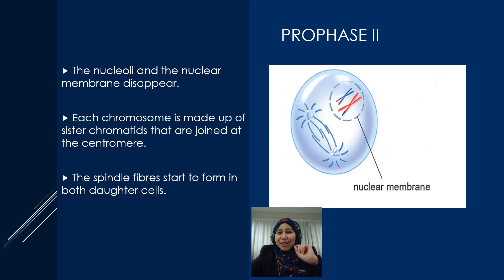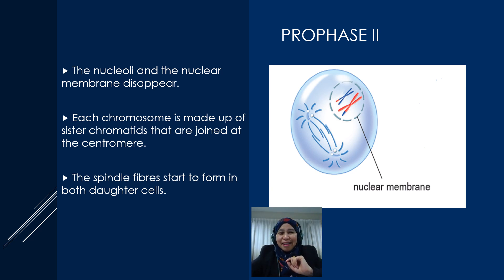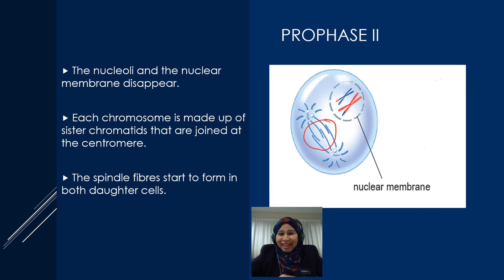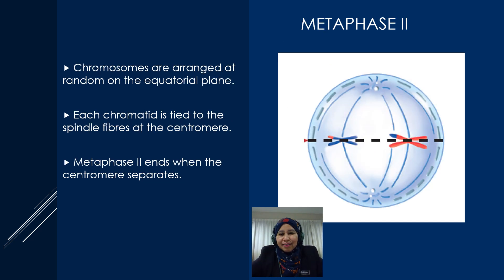At the end of meiosis 1, we have 2 daughter cells. For meiosis 2, I will take only 1 daughter cell as an example. In prophase 2, the nucleoli and nuclear membrane start to disappear again. Each chromosome is made up of sister chromatids joined at the centromere, and spindle fibers start to form again.